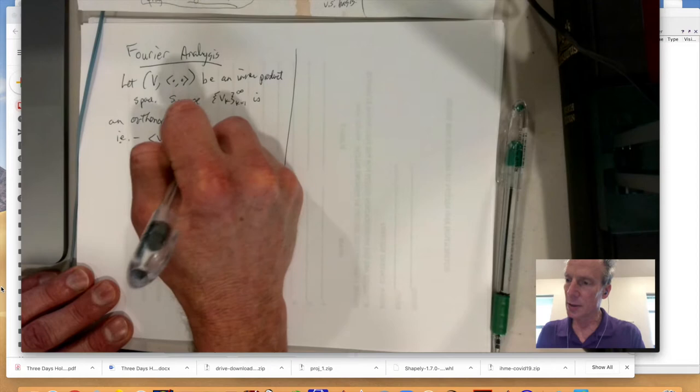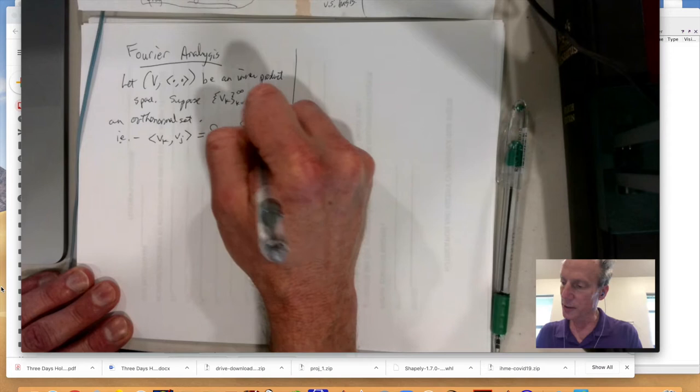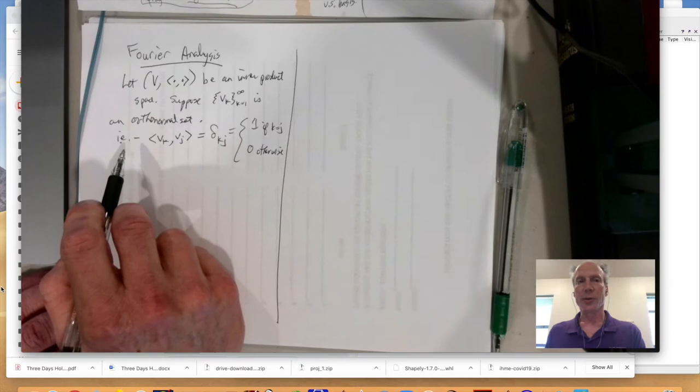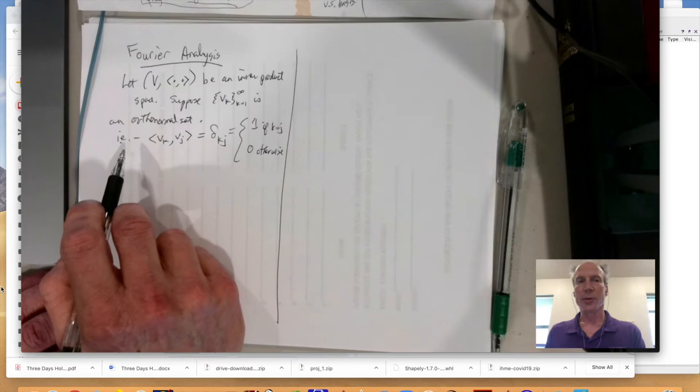So in other words, VK, VJ is going to give you delta KJ, the Kronecker delta symbol, which really means 1 if K equals J, and then 0 otherwise.